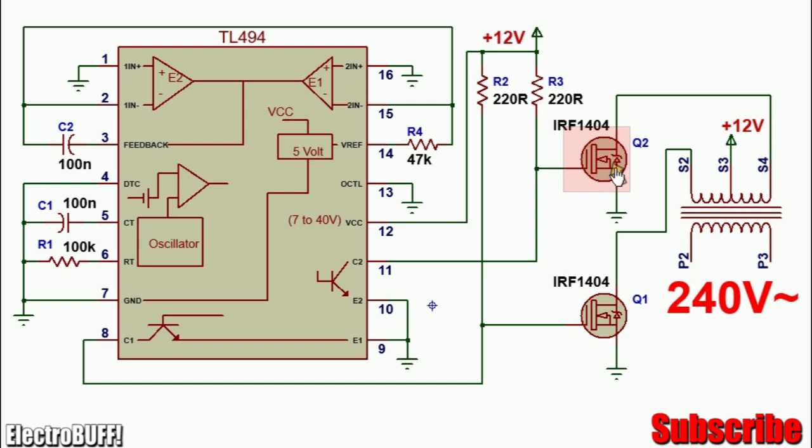The gates of the MOSFETs together with the open collectors are pulled up to 12 volts through 220 ohm resistors which should be rated at least 3 watts. And to ensure that the outputs operate in a push-pull configuration, you need to pull down the output control pin 13 to ground.